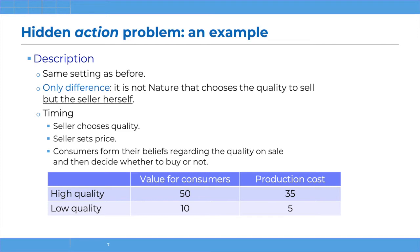Now let's move to a more realistic setting where the firm itself is choosing the quality. We can keep the same numbers, but think of the production cost as the result of a decision by the seller to invest or not in high quality — it's not something inherited by the seller, it's a decision. In a sense things get worse, because given what we've just seen, and given that there is no way for the seller to convince consumers that she is actually producing high quality, why would the seller pay the larger cost of 35 if consumers cannot be convinced to pay 50?